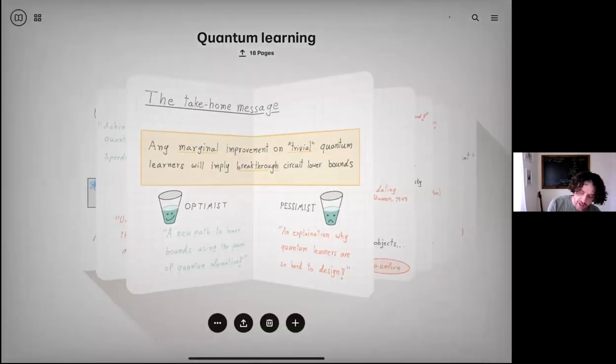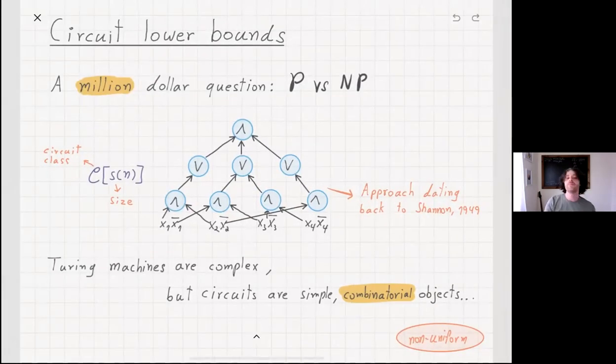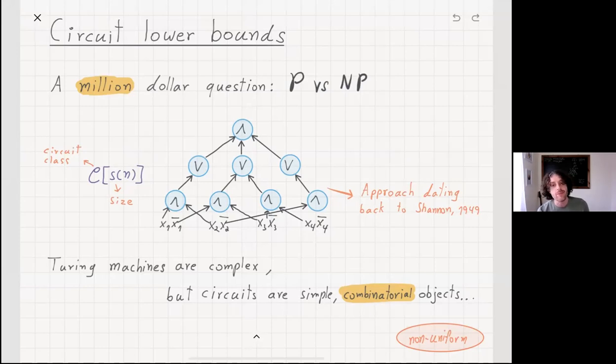So I'd like to start with the necessary background in circuit lower bounds. As I'm sure you all know, we have the million dollar P versus NP problem. This is something that's been harassing us for decades. Can we separate problems that are efficiently solvable versus problems that are efficiently verifiable? Can we get a separation here?